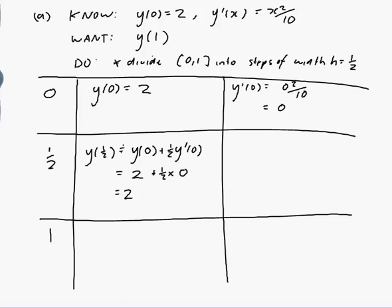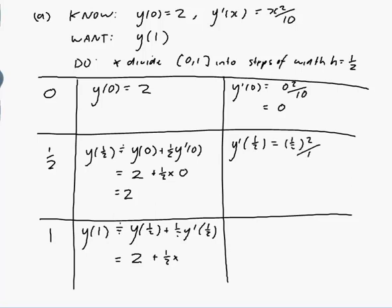All right, now I use that value to calculate y(1). So y(1) is approximately equal to y of the previous step plus h times y' of the previous step. Now y of the previous step was 2 plus half times, oh, I need y'(1/2). So y'(1/2) would be a half squared over 10 which would be a quarter over 10 which would be a fortieth.